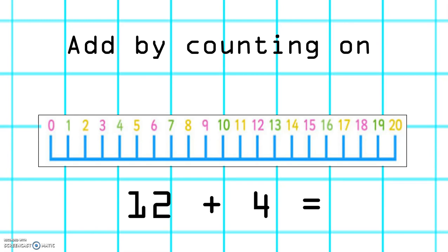And here we have this problem: 12 plus 4. The biggest number is 12, so we're going to start there, and we're going to count on 4. 1, 2, 3, 4. The number that we land on is 16. So 12 plus 4 equals 16.